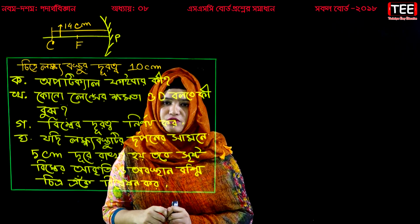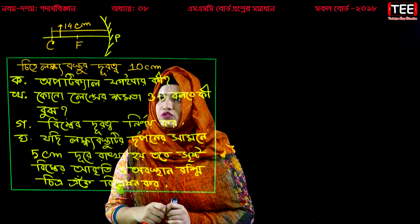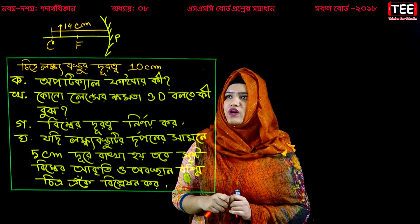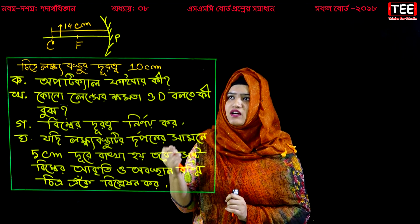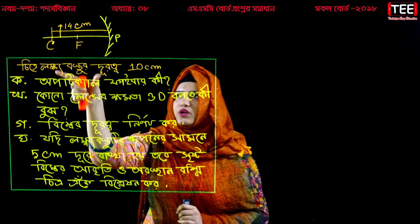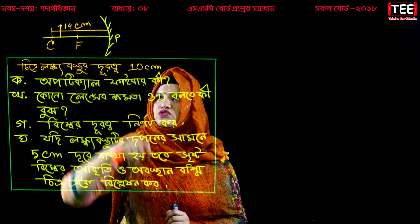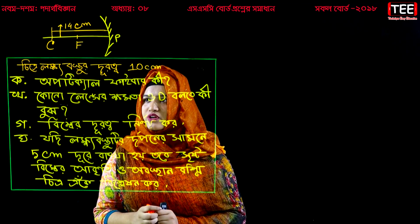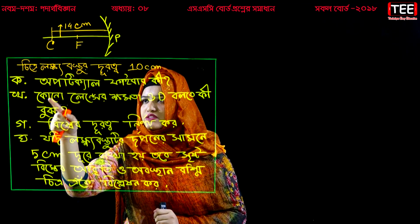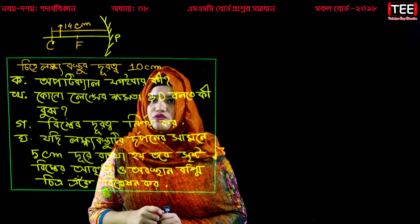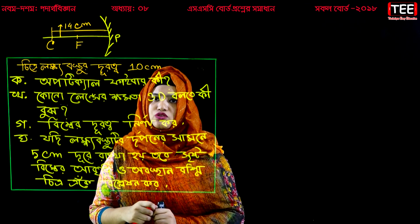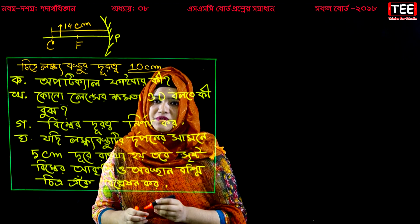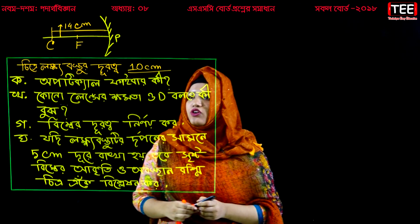The concave mirror has C, F, and P — that is, meru (pole), focus, and center of curvature given. The radius of curvature is 22 cm and 14 cm. Also, the radius of curvature is 23 cm. Now our stimulus is given below: the radius of curvature for the concave mirror is 10 cm.